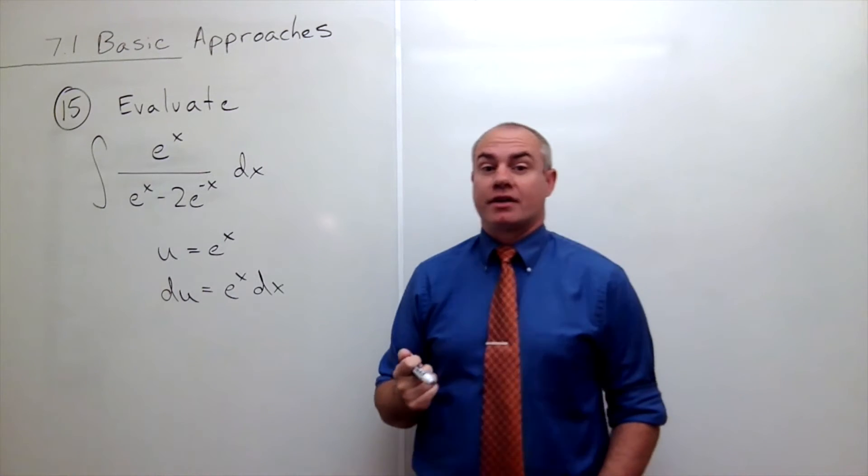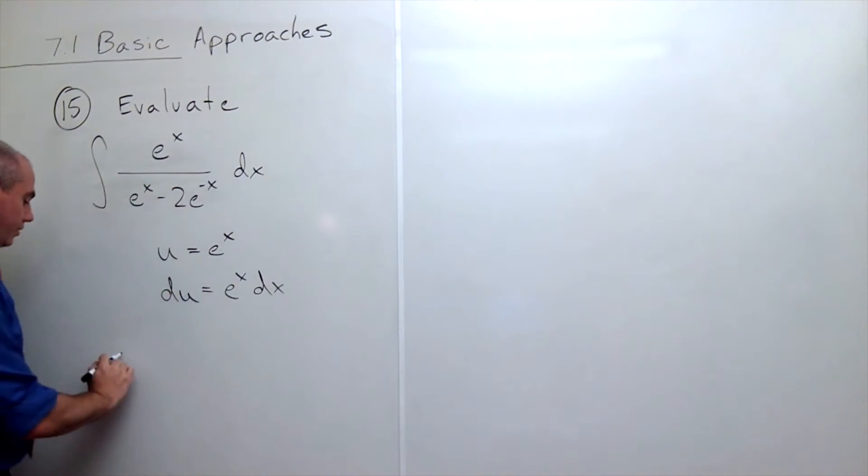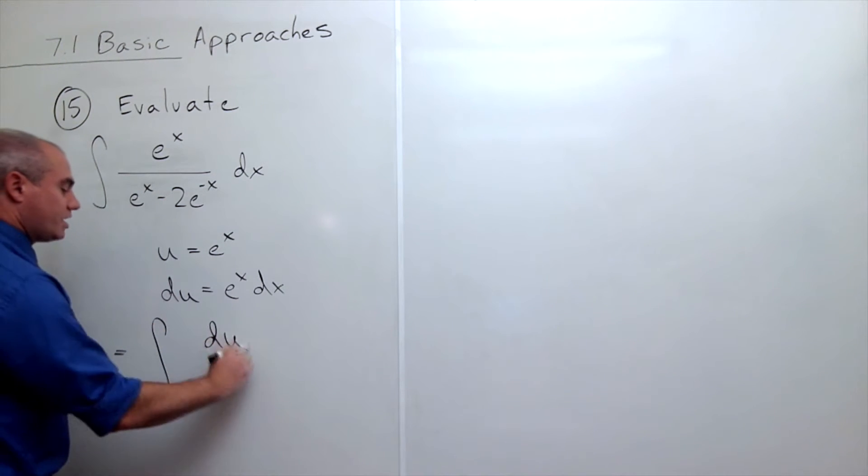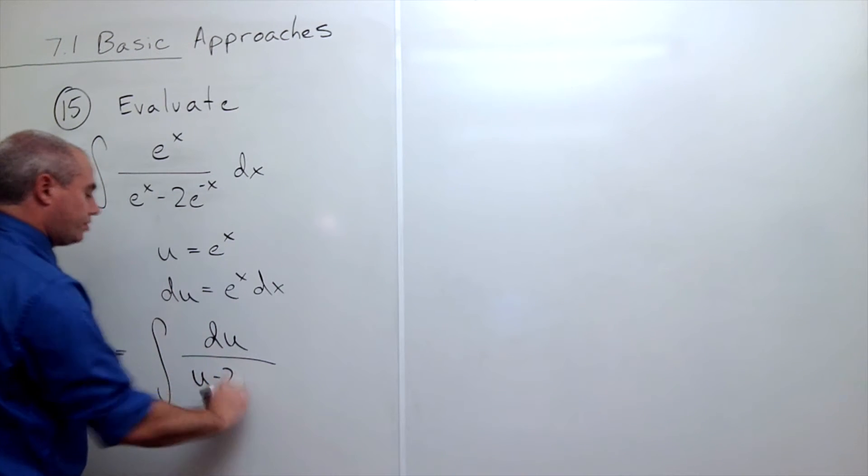So now if I make this substitution, let's write it down here. I get the integral of, on top I just have du, and on the bottom I have u minus 2 over u.